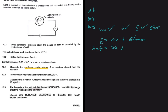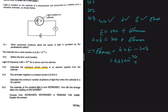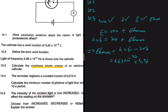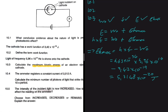Since energy equals h times f, we have: h times f equals the work function plus EK max. Making EK max the subject gives us: EK max equals h times f minus the work function. So that's 6.63 times 10 to the minus 34 multiplied by 5.96 times 10 to the 14 hertz, minus the work function of 3.42 times 10 to the minus 19, which equals 5.3148 times 10 to the minus 20 joules.